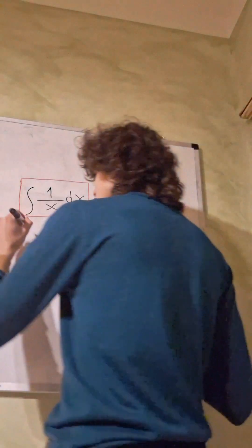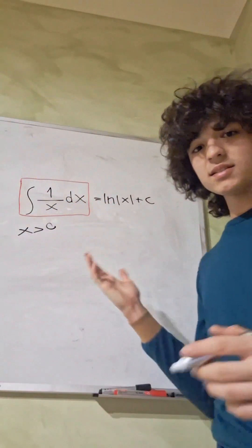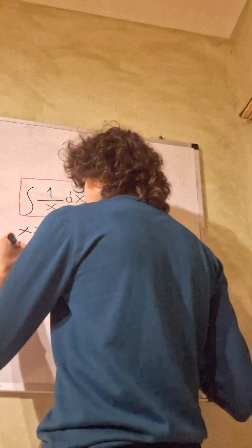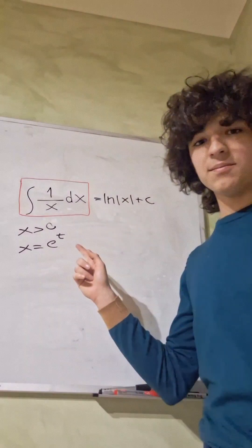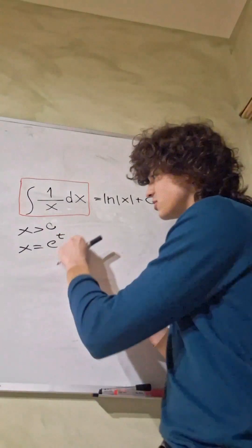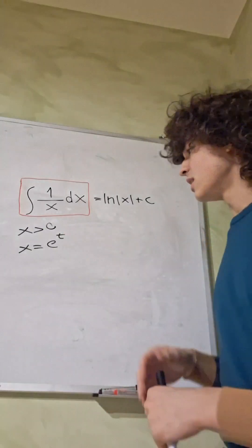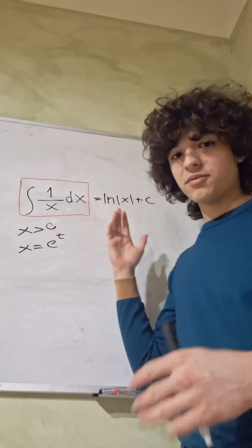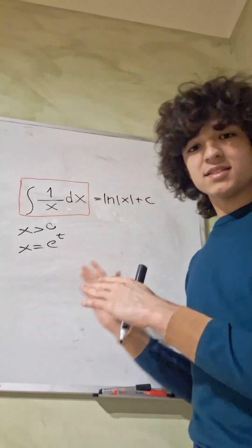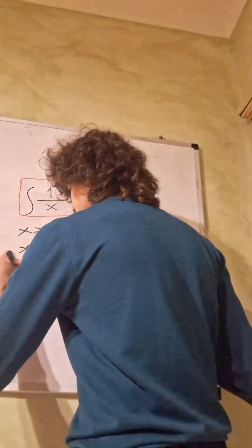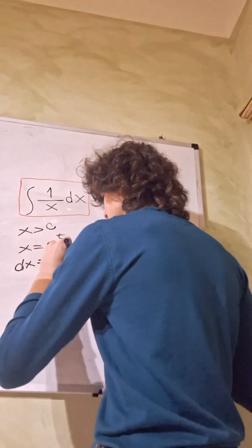The first case is when x is greater than zero. When x is greater than zero, we can take the simple substitution x equals e^t. X has to be positive because e^t is always greater than zero, no matter what value of t we choose. So let's differentiate both sides: dx equals e^t dt.